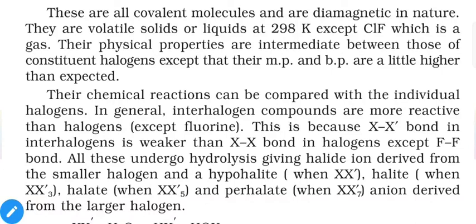Interhalogen compounds are covalent molecules, diamagnetic in nature, and volatile solids or liquids at 298 K, except ClF which is a gas. Their physical properties are intermediate between those of the constituent halogens, but their melting and boiling points are slightly higher than expected because the molecules are polar — due to different elements attached — and polar molecules have stronger intermolecular attractions. They are more reactive than individual halogens except fluorine, because X–X' bonds are weaker than X–X bonds.